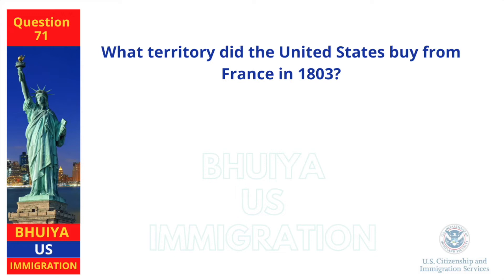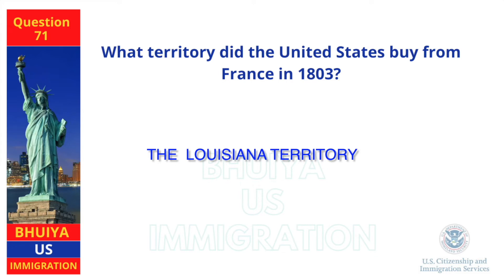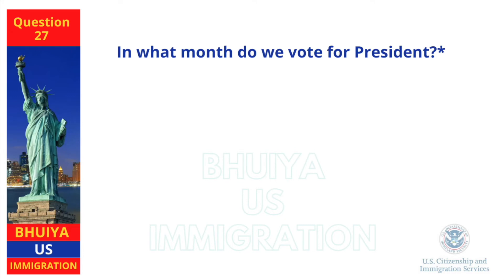What territory did the United States buy from France in 1803? The Louisiana Territory. In what month do we vote for president? November.